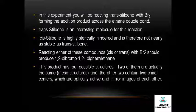Cis-stilbene is highly sterically hindered and is therefore not nearly as stable as trans-stilbene. Reacting either of these compounds with bromine should produce 1,2-dibromo-1,2-diphenylethane. This product has four possible structures; two of them are actually the same — they are meso structures — and the other two contain two chiral centers, which are optically active and mirror images of each other.